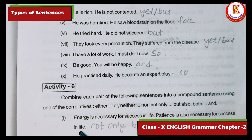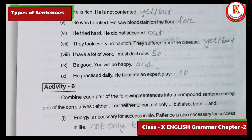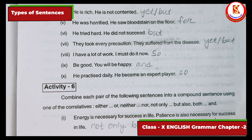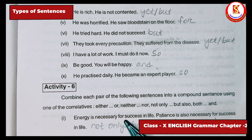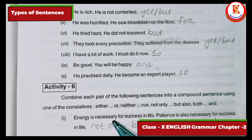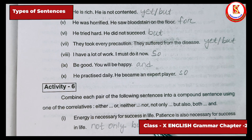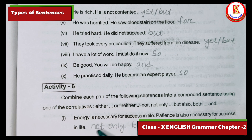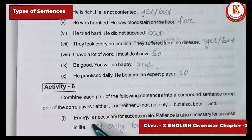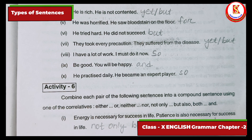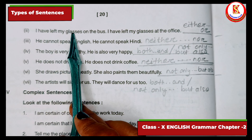Activity six: join sentences using correlative conjunctions. 'Energy is necessary for success in life' and 'patience is also necessary for success in life' — use 'not only...but also': 'Not only energy but also patience is necessary for success in life.' We can also write: 'Both energy and patience are necessary for success in life.'